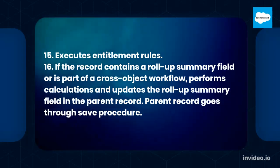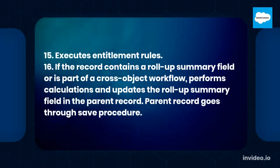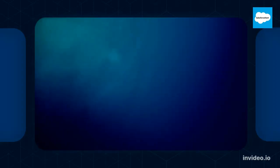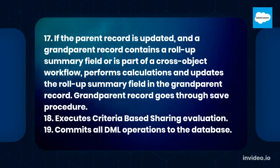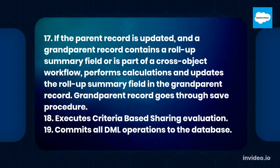Step 15: Executes entitlement rules. Step 16: If the record contains a roll-up summary field or is part of a cross-object workflow, performs calculations and updates the roll-up summary field in the parent record. Step 17: If the parent record is updated and a grandparent record contains a roll-up summary field or is part of a cross-object workflow, performs calculations and updates the roll-up summary field in the grandparent record, and the grandparent record goes through the save procedure. Step 18: Executes criteria-based sharing evaluation. Step 19: Commits all DML operations to the database.